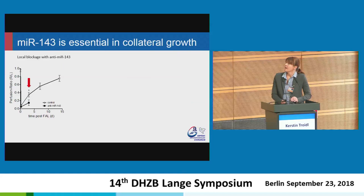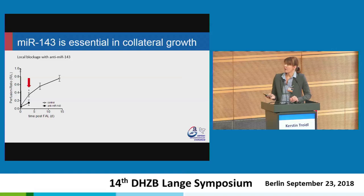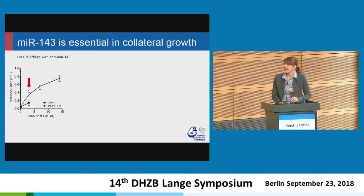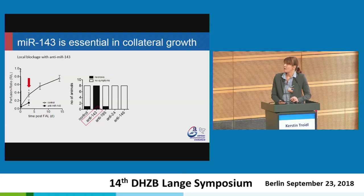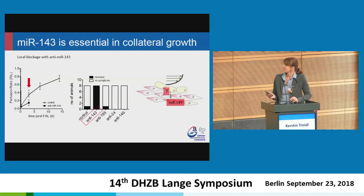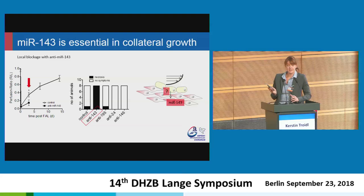To investigate if these microRNAs have any functional impact on collateral growth, we locally blocked them using so-called antimers, which block microRNAs so they can no longer function. In a mouse model, after just three days, mice were not able to survive — they showed severe necrosis after femoral artery ligation. All mice in the anti-miR-143 group died and the experiment had to be stopped. So we know that microRNA-143 has real functional importance during collateral growth, but we still don't know how fluid shear stress gives the signal for expression of this microRNA.